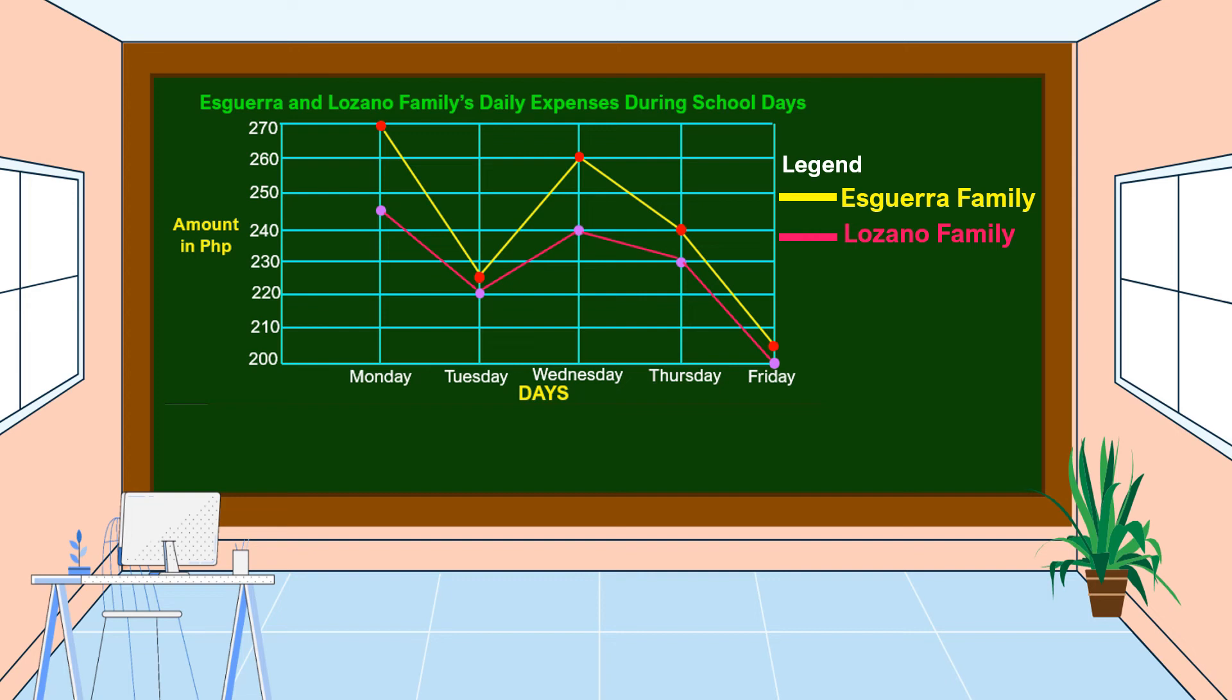Yes, we can draw an inference like this. From the information given in the line graph, it can be inferred that Isguero family has higher expenses than Lusano family during school days. This is one of the inferences we can make out of the data in a double line graph.